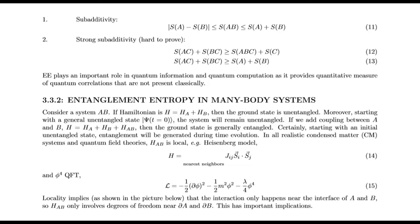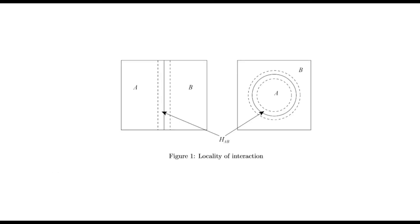Entanglement entropy in many-body systems: Consider a system AB. If Hamiltonian is H = H_A + H_B, then the ground state is unentangled. Moreover, starting with a general unentangled state, the system will remain unentangled. If we add coupling between A and B, H = H_A + H_B + H_AB, then the ground state is generally entangled. Starting with an initial unentangled state, entanglement will be generated during time evolution. In all realistic condensed matter systems and quantum field theories, H_AB is local.